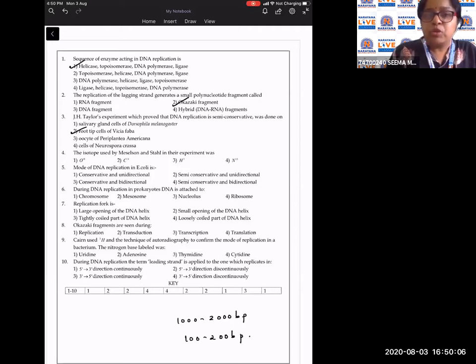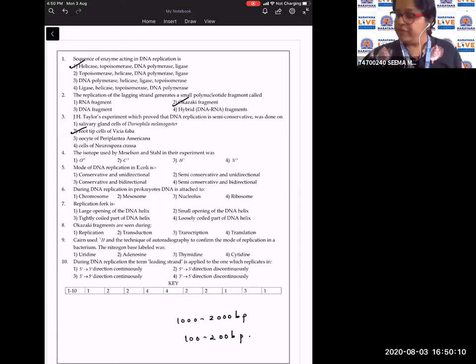The isotope which was used by Meselson-Stahl in their experiment was N15. So answer to this question is the fourth option.